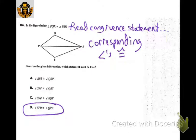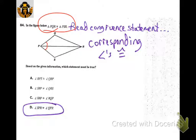What must be true according to the congruence statement? Looking at angle SPR — that would be congruent to angle QPR. Use the congruence statement to verify: S goes with Q, P with P, R with R. So going SPR in that same order gives QPR — see how it starts in the middle, goes to the left, then to the right.